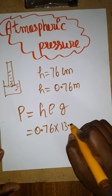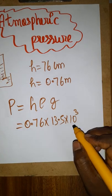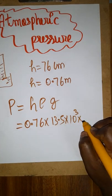Density is 13.5 times 10 to the power plus 3, which is the density of mercury. Gravity is 9.8.